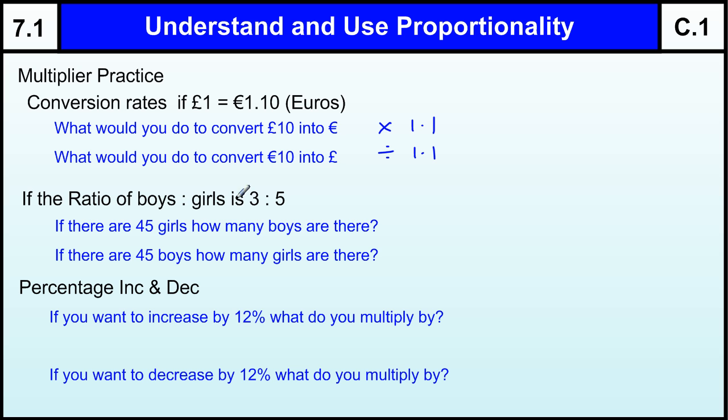The ratio of boys to girls is 3 to 5. If I've got 45 girls, how many boys are there? Well, I need to figure out which one is which. So I've got 3 to 5 boys to girls. And I'm starting with 45 girls. To get back to the boys, I need to divide by 5 to take it down to 1 and times by 3. 45 divided by 5 is 9. Times by 3 is 27.